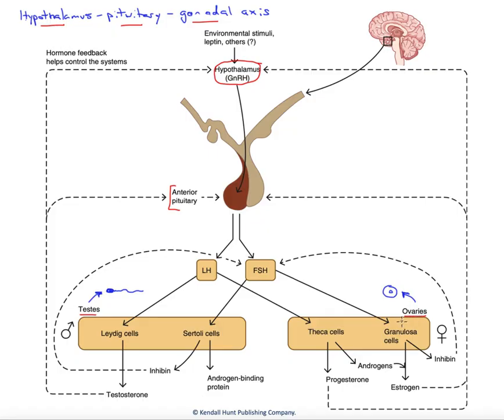The testes and ovaries have essentially three main cell types. They've got the gamete cells that they produce, the sperm in males seen here, and the oocyte or eggs over here in the female.